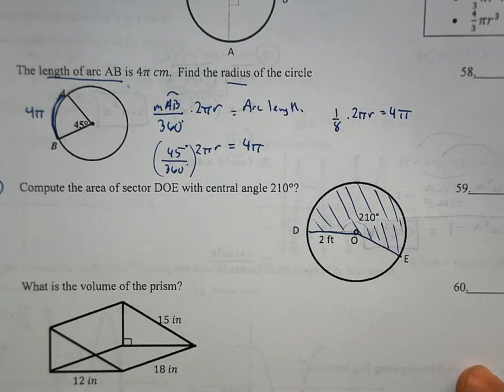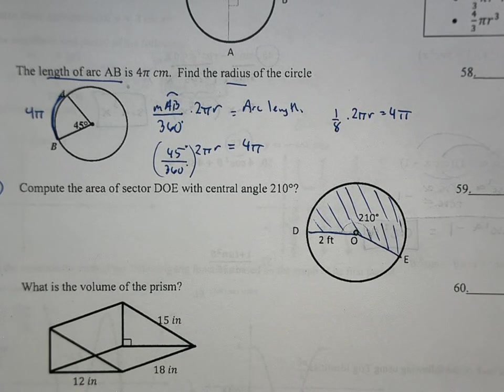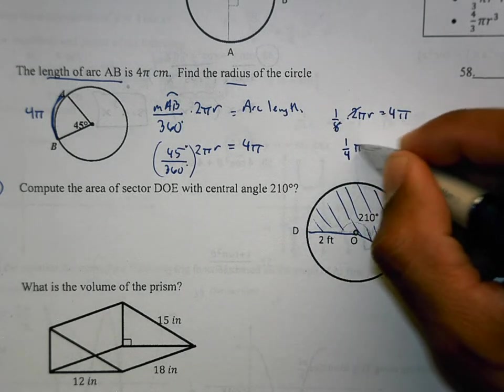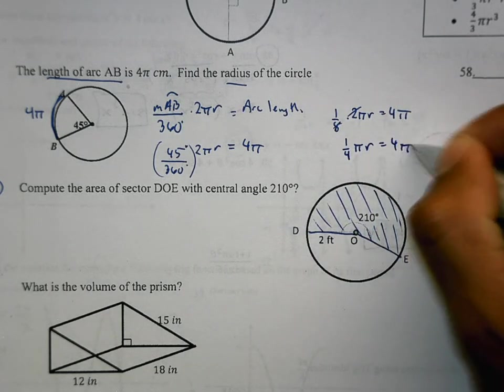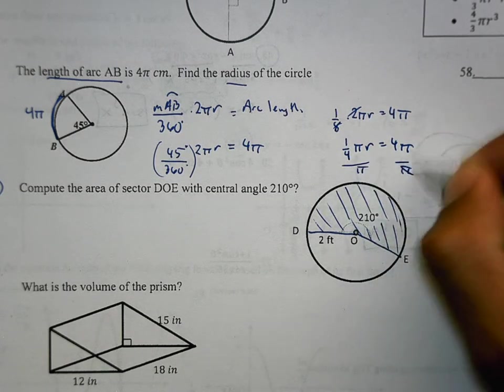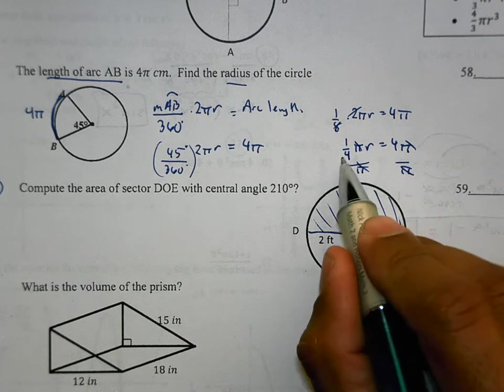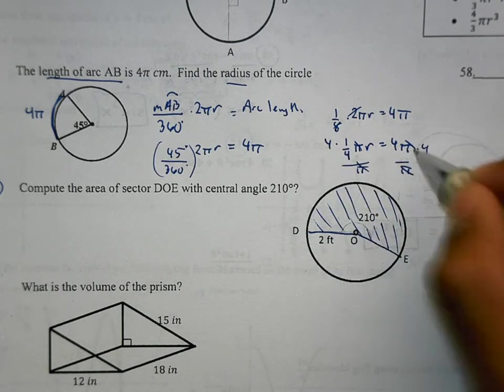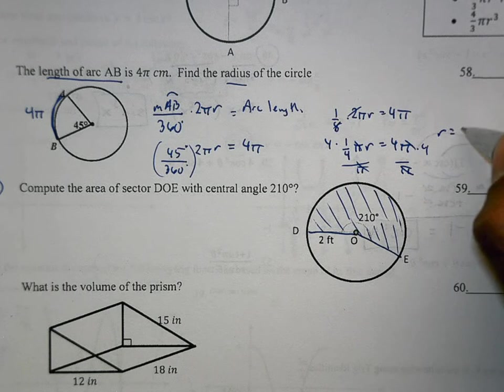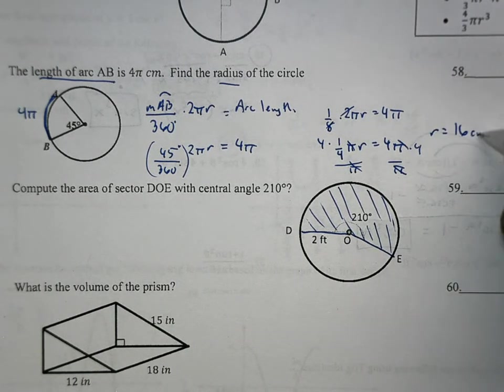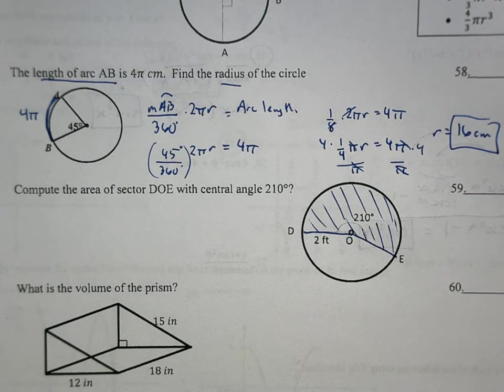Scoot this over so you could see it. Two goes into one-eighth, one-fourth. If I divide by π, divide by π, and then I would want to times by four because it's dividing by four. Times by four.